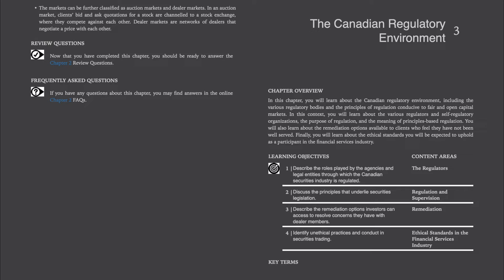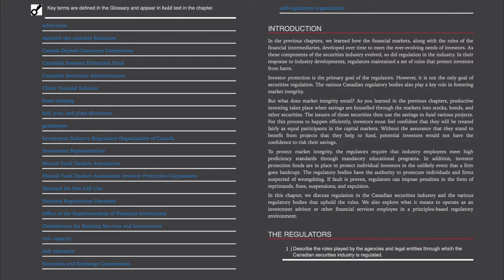There are four main sections to this chapter: the regulators, regulation and supervision, remediation, and ethical standards in the financial services industry. All the key terms and definitions will be shared at the end of this chapter. Introduction. In the previous chapters, we learned how the financial markets, along with the roles of financial intermediaries, developed over time to meet the ever-evolving needs of investors.